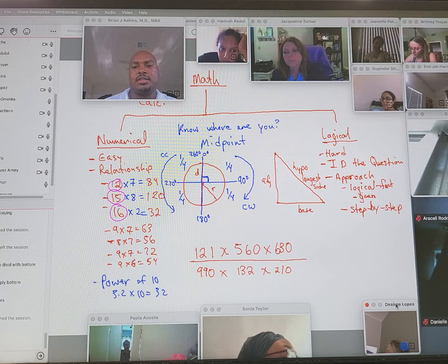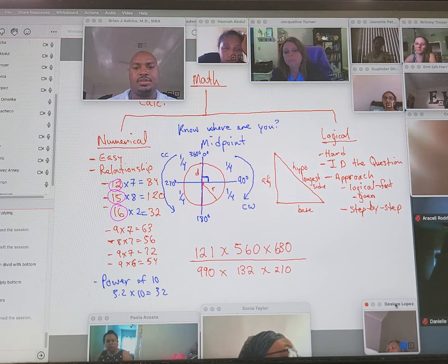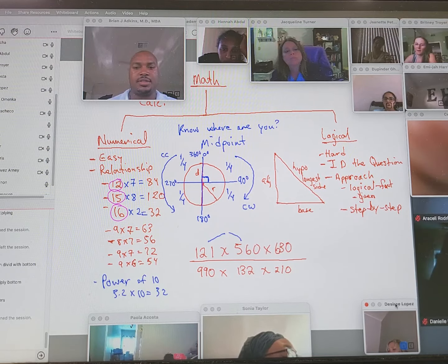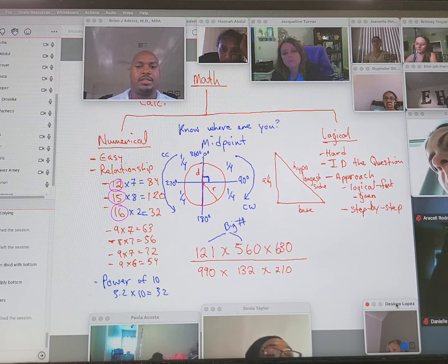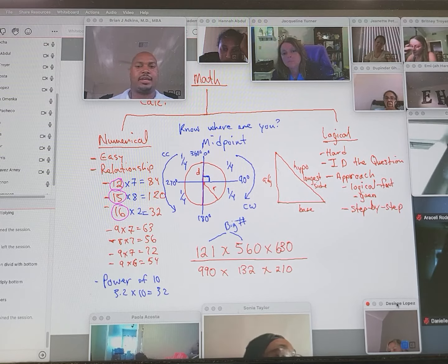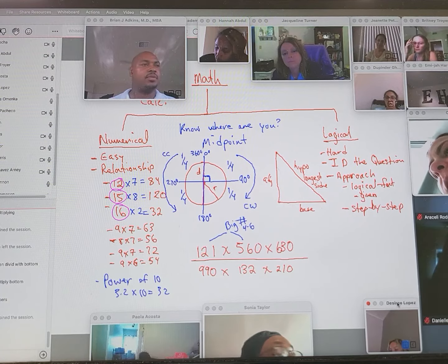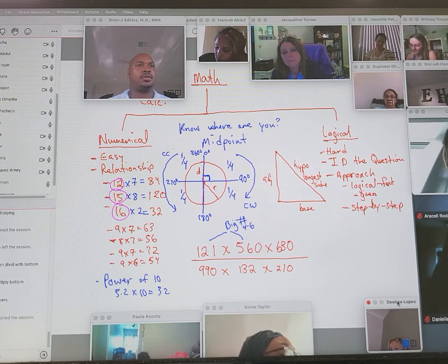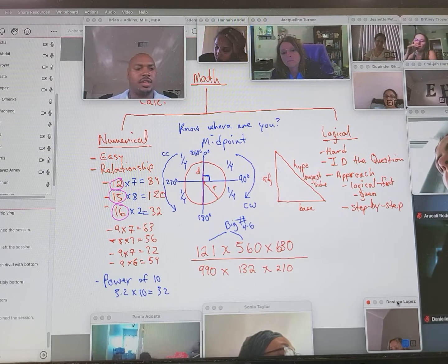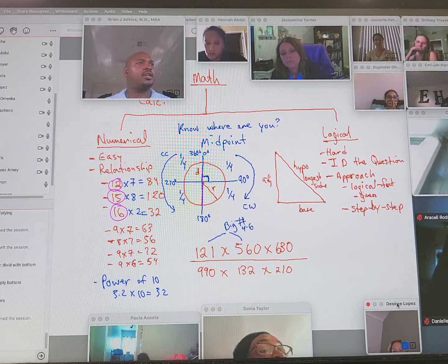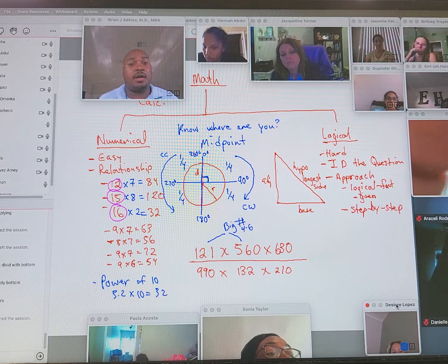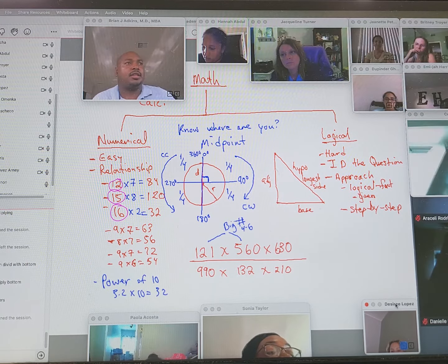Okay. So that means that you take this 121 times 560. And so that's going to be a big number. We're talking like a four to six digit number there. We're not talking a small digit number. And so Jennifer, any idea what that number might be? Jeanette, any idea what that number is? I mean, off the top of your head without a calculator, any idea what that number is?